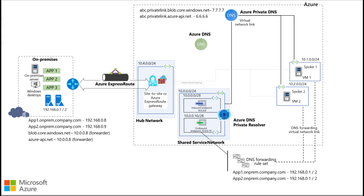What happens here is you create the resource with inbound and outbound subnets within your hub network, and the VPN gateway sits within its own subnet. All the requests that land through the VPN gateway use this Private DNS Resolver to route to particular private endpoints.